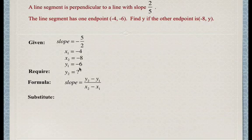When we substitute in, the slope is negative 5 over 2. The y1 coordinate is negative 6, and the x2 coordinate is negative 8. The x1 coordinate is negative 4.